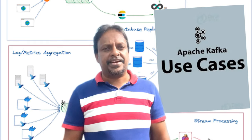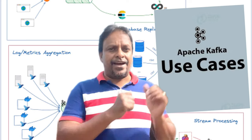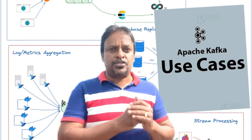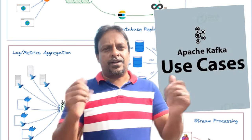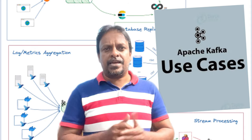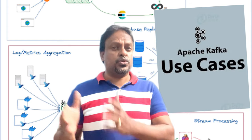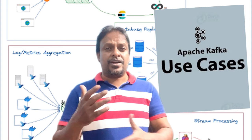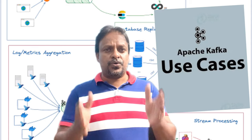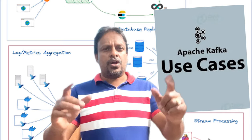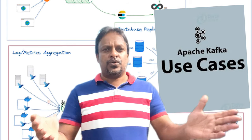The second one is log aggregation. When we have different applications, each will have its own logs. Those logs can be aggregated through Kafka. Through Kafka streaming, we can aggregate the logs into different analysis reports, through which we can find metrics and analyze results.